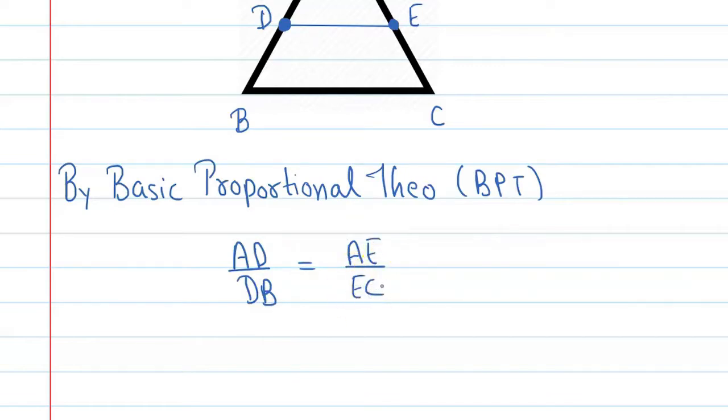Alright, so let's put in the values. So AD equals 4x minus 3, DB equals 3x minus 1, it equals 8x minus 7 upon 5x minus 3. Alright.